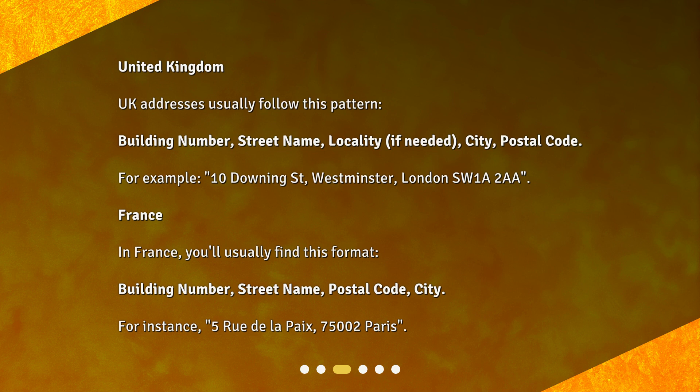France. In France, you'll usually find this format: building number, street name, postal code, city. For instance, 5 Rue de la Paix, 75002 Paris.